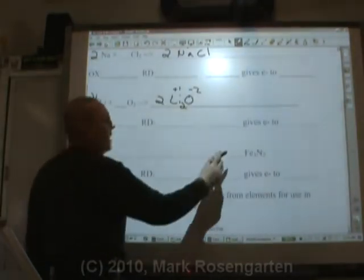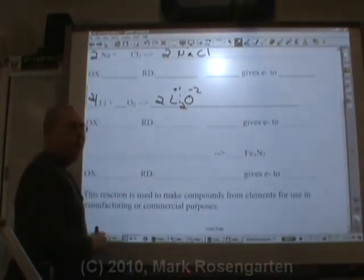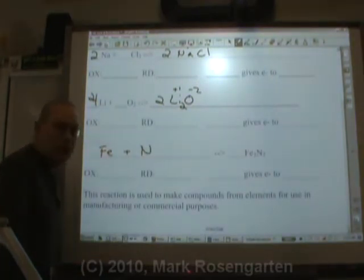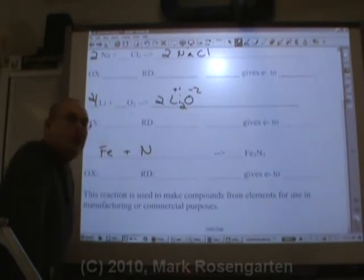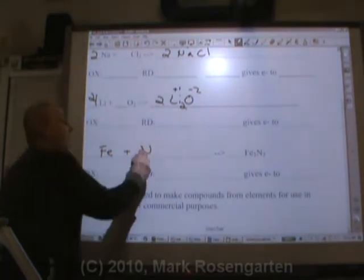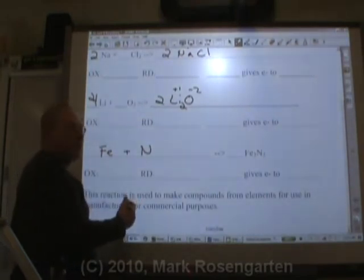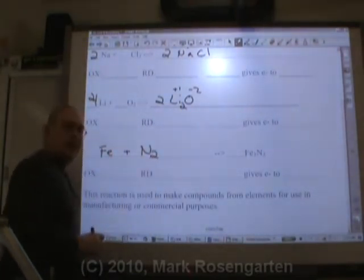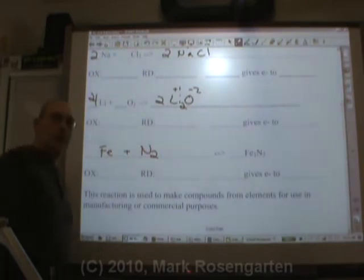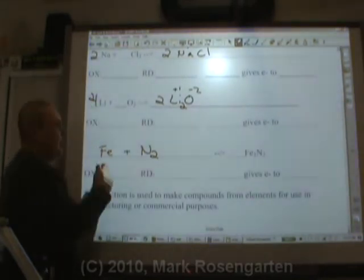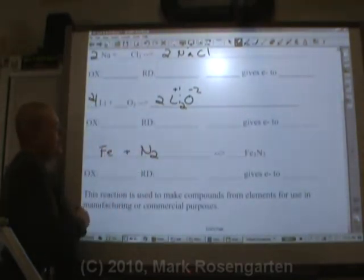If we're going to make the compound Fe3N2, that comes from the two elements Fe and N. Now nitrogen is one of those diatomic molecules, Brinkelhoff: B-R-I-N-Cl-H-O and F. Since it's diatomic when it's not in a compound, we write it as N2. Do we do the same thing for iron? No. Iron is not diatomic.